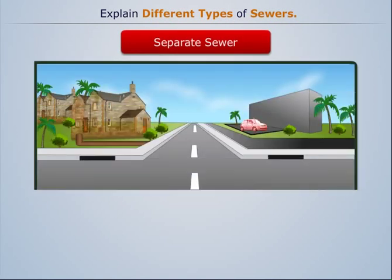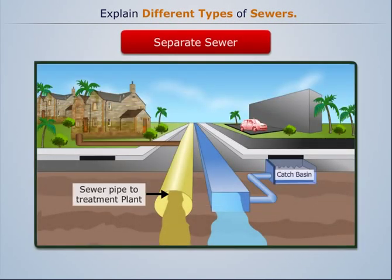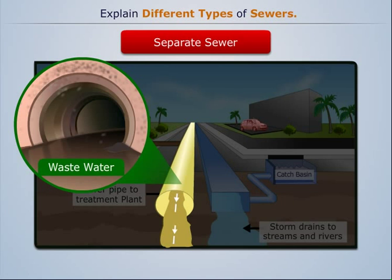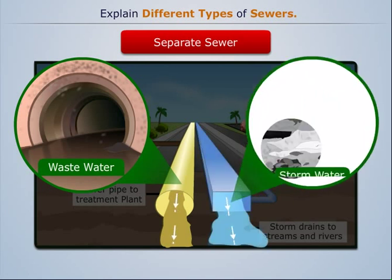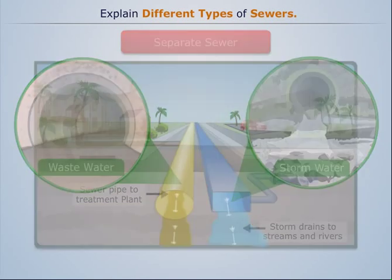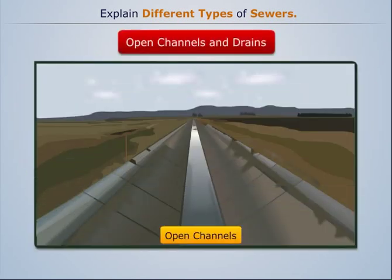Separate sewer systems are designed to convey wastewater and storm water in separate pipes. Sanitary sewer systems collect and transport wastewater, while storm sewer systems collect and transport storm water runoff.